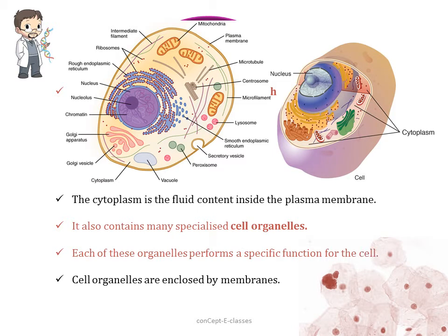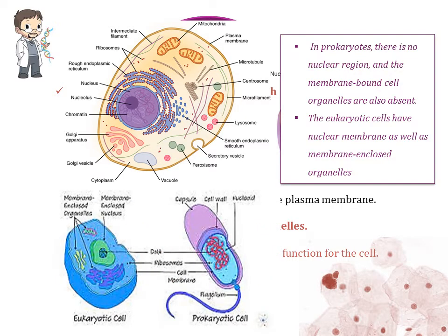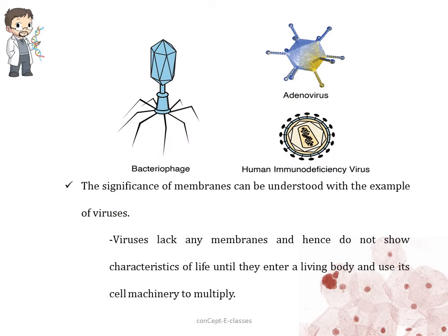Each of these organelles performs a specific function and they are enclosed by membranes. In prokaryotes there is no nuclear region, and similarly membrane-bound cell organelles are also absent, whereas in eukaryotes they have a nuclear membrane as well as membrane-enclosed organelles. The significance of membranes can be understood with the example of viruses — viruses lack membranes and hence do not show any characteristics of life until they enter a living body and use it as a host to multiply.